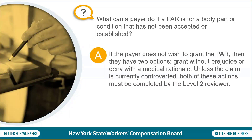What can a payer do if a PAR is for a body part or condition that has not been accepted or established? If the payer does not wish to grant the PAR, they have two options: grant without prejudice or deny with a medical rationale. Unless the claim is currently controverted, both of these actions must be completed by the Level 2 reviewer.